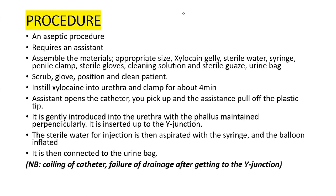After ensuring the tip of the catheter is in the bladder, inject sterile water for injection to inflate the balloon — inflating the balloon makes it self-retaining. It is then connected to the urine bag for continuous drainage. We've talked about coiling of the catheter and failure of drainage after getting to the Y junction.